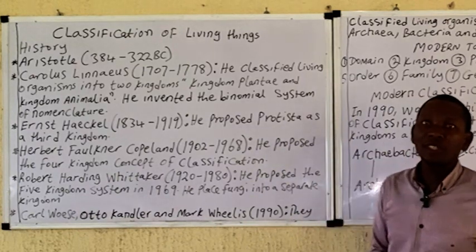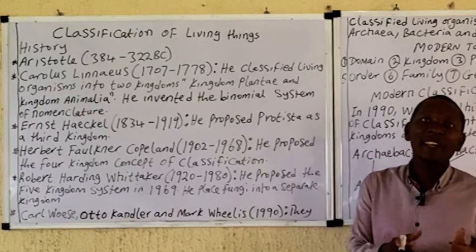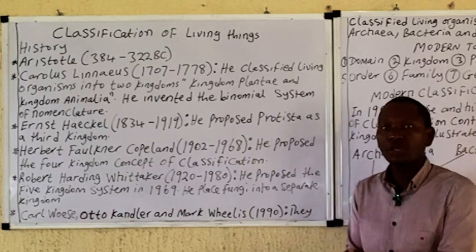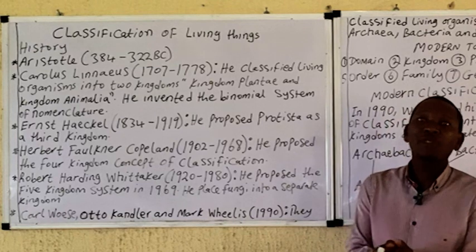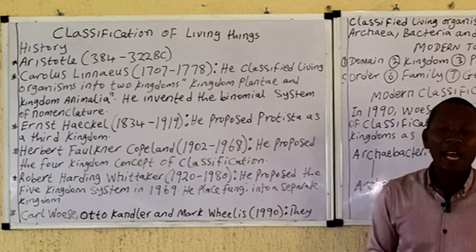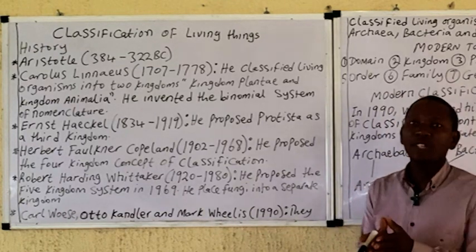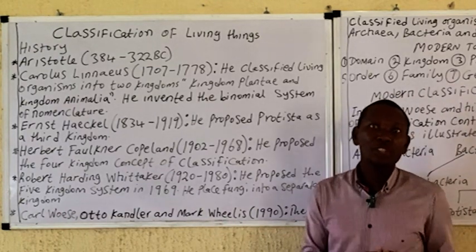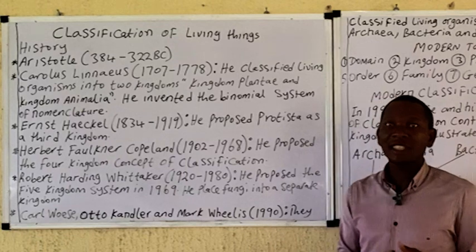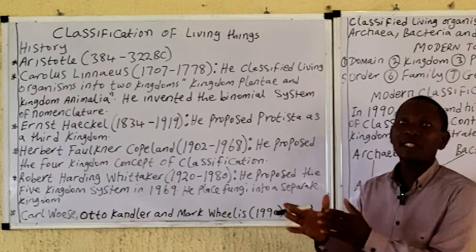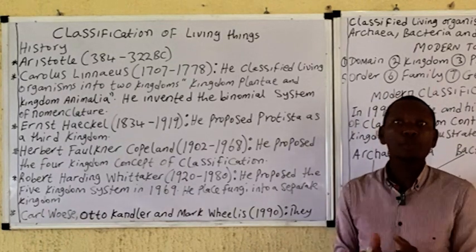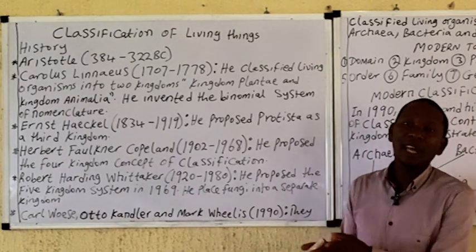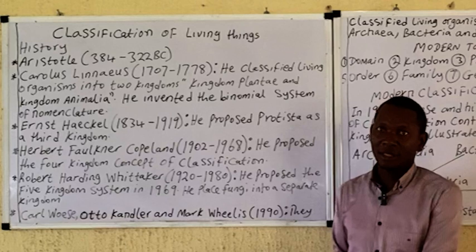The third person is Ernst Haeckel, who proposed a third kingdom. He divided living organisms into three kingdoms: the kingdom Protista, the kingdom Plantae, and the kingdom Animalia. In this case, he separated the protists from the plants and animals.